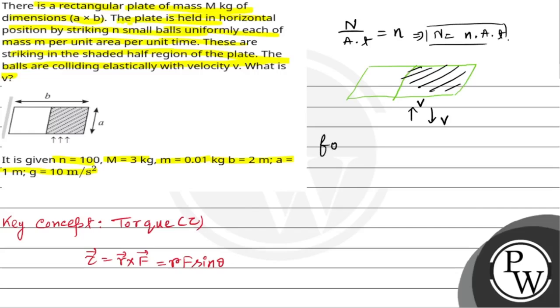So we can say, for one ball, change in momentum, that is del p equals mv minus negative mv, because before and after collision, the direction of the velocity is opposite. So we have 2mv. And for capital N balls, the change in momentum, that is del p equals 2mv into capital N.